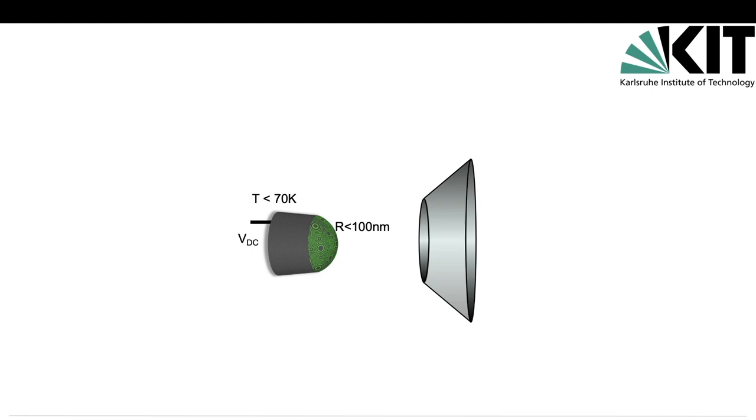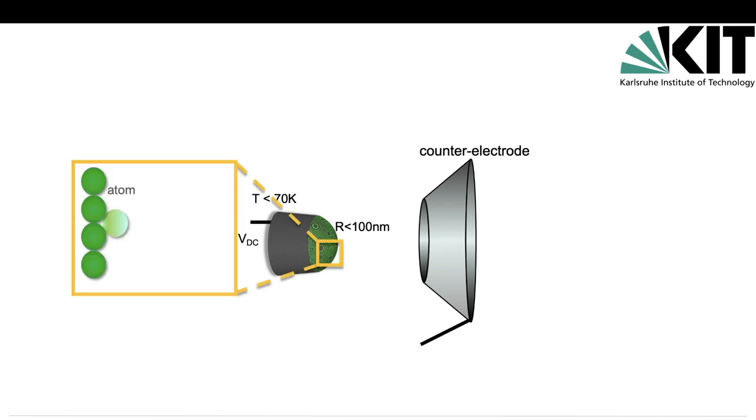A high voltage in the range of 1 to 10 kilovolts is applied by a counter electrode. The consequence of the small end radius and the high voltage is that on the surface, a really humongous electric field is generated, which is in the order of 10^10 volts per meter.